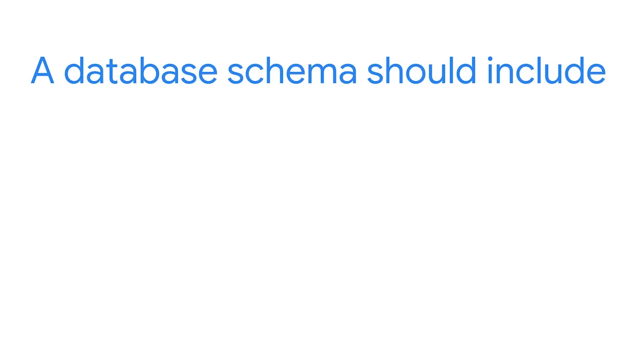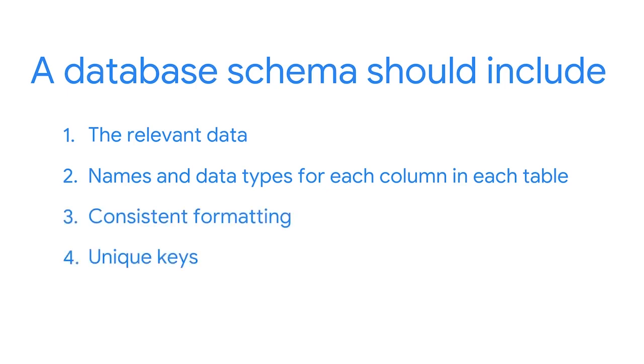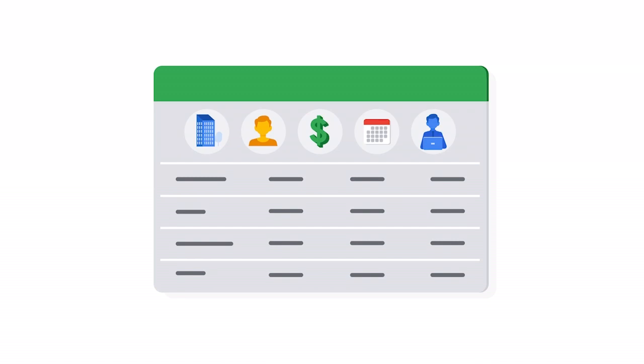There are four elements a database schema should include: the relevant data, names and data types for each column in each table, consistent formatting across data entries, and unique keys for every database entry and object. A database schema is a way of describing how data is organized — it doesn't actually contain the data itself, but describes how the data is shaped and the relationships within the database. It needs to include all of the data being described, or else it won't be a very useful guide for users trying to understand how the data is laid out.